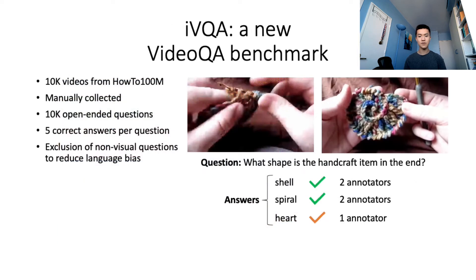For evaluation, we manually collect IVQA, a new open-ended video QA dataset made with 10,000 video clips from HowTo100M, each annotated with one question. Similarly to the VQA V2 dataset in the image domain, IVQA contains multiple possible answers for each question to provide a more detailed evaluation. We also manually exclude non-visual questions to reduce language bias.